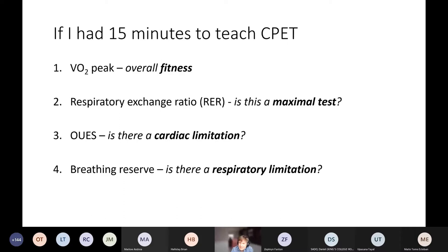The first is the peak VO2, which is the overall fitness. Then the thing called the RER, the respiratory exchange ratio, which will help us figure out if this test we've just done is accurate. Then the OUES, which will help us identify if there's a heart problem. And then the breathing reserve, which will help us figure out if there's a lung problem.